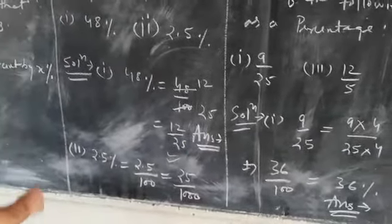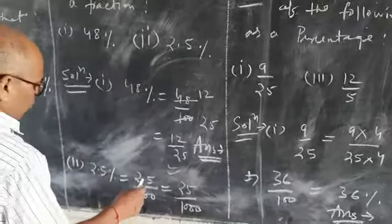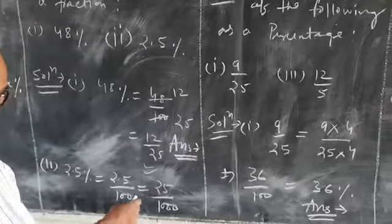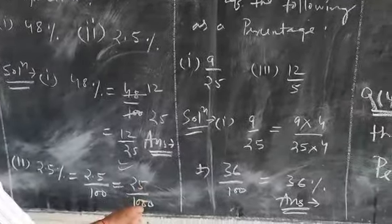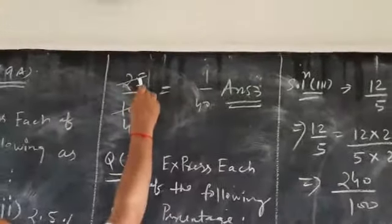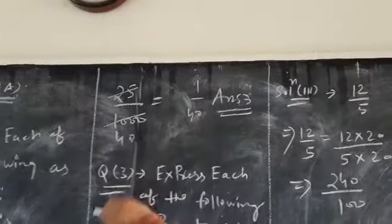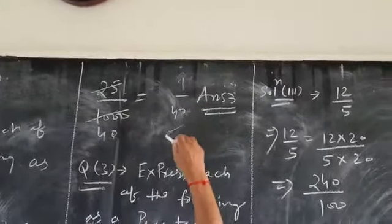Second question: 2.5 percent. It can be written as 2.5 upon hundred, that is 25 upon 1000. It can be written as 1 upon 40. It is the required answer.